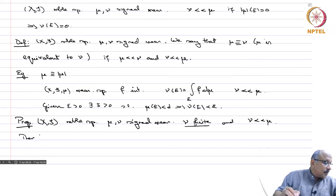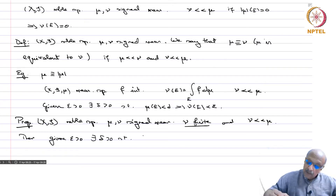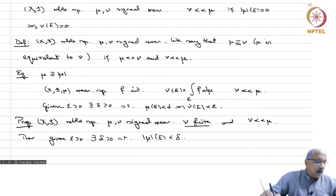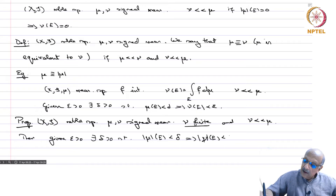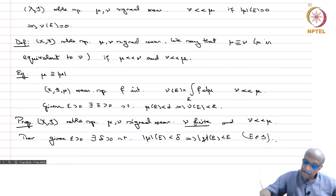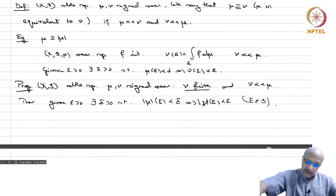Then given epsilon > 0, there exists delta > 0 such that |mu|(E) < delta implies |nu(E)| < epsilon, for E in S. This is exactly the same epsilon-delta condition we had in the case of the integral definition.